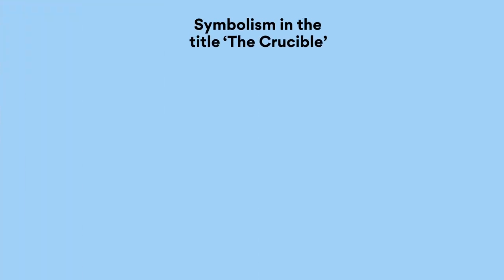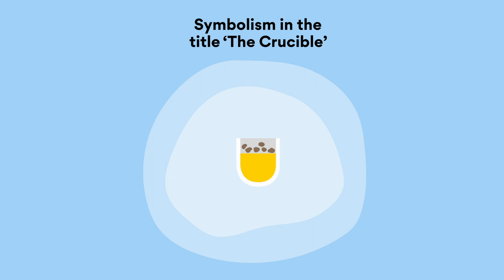Symbolism in the title: The Crucible. From the very first time we lay eyes on this play, we're met with symbolism, which is when one item is used to represent a greater idea. For those of you who study chemistry, you may be acquainted with a crucible, which is a melting pot used for extremely hot chemical reactions. An alternative meaning of a crucible is a significant or difficult trial or test.